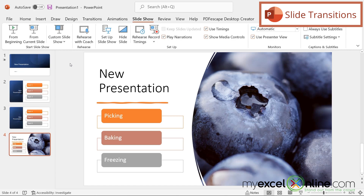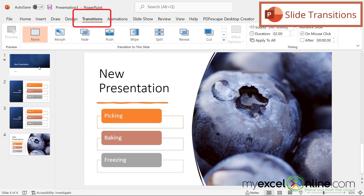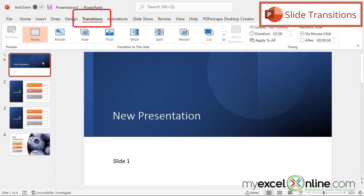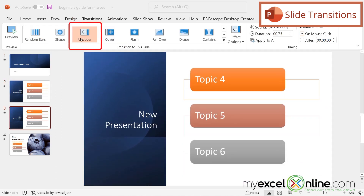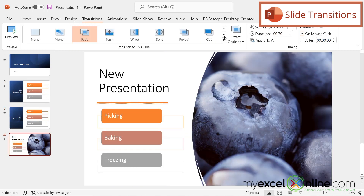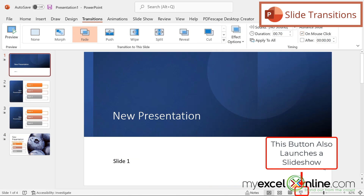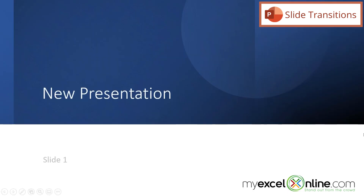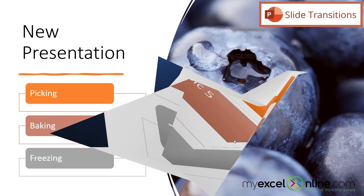But before we finish up today, I would like to show you a few more exciting things you can do to your slides. Let's look at the transition tab. I'm going to go back to the beginning by clicking on the first slide and select fade. On the second one I will do push. Uncover for slide three. And on the fourth one for fun, let's do the origami one. So let's watch the slideshow one more time — there's the fading, there's the pushing, there's the uncovering, and then there's the origami.